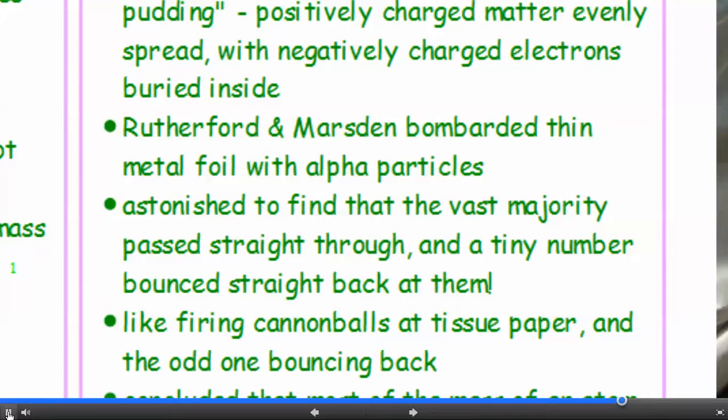Now what Rutherford and Marsden did was they bombarded thin metal foil with alpha particles. We'll come on to those in a minute. And they were astonished to find that the vast majority of these alpha particles passed straight through the metal foil, but a tiny number bounced straight back at them. And they equated this to like firing cannonballs at tissue paper and having the odd one bouncing straight back at you.